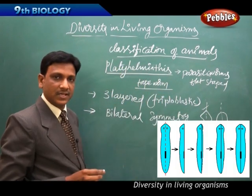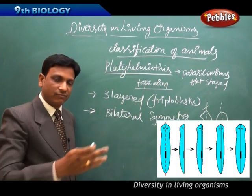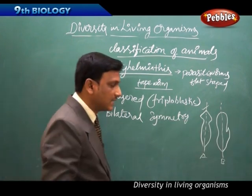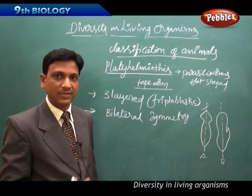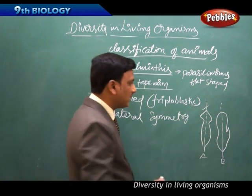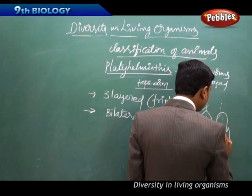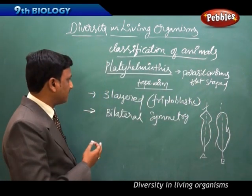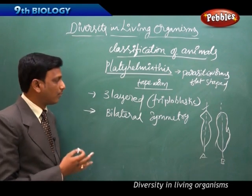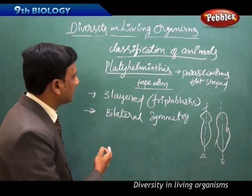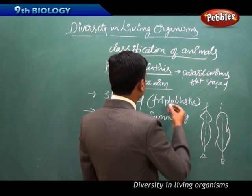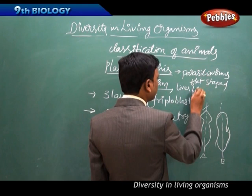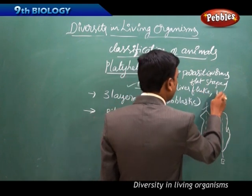Platyhelminthes show bilateral symmetry — cutting them down the center gives two equal, similar halves. Examples of Platyhelminthes include parasitic worms like tapeworm, liver fluke, and planarians.